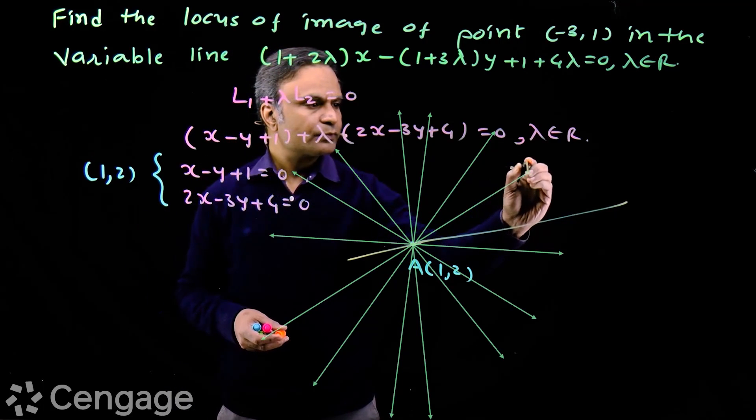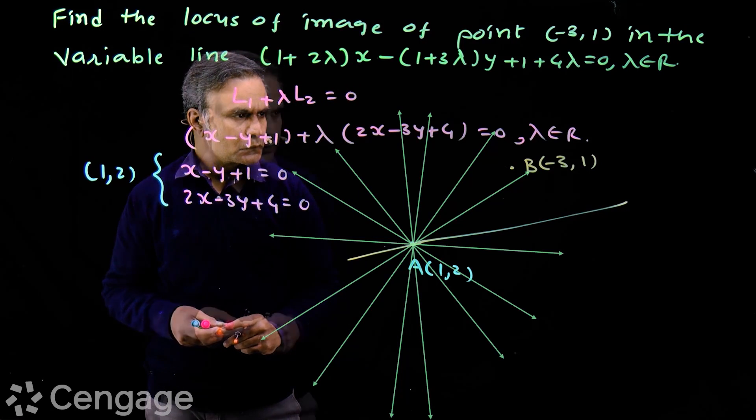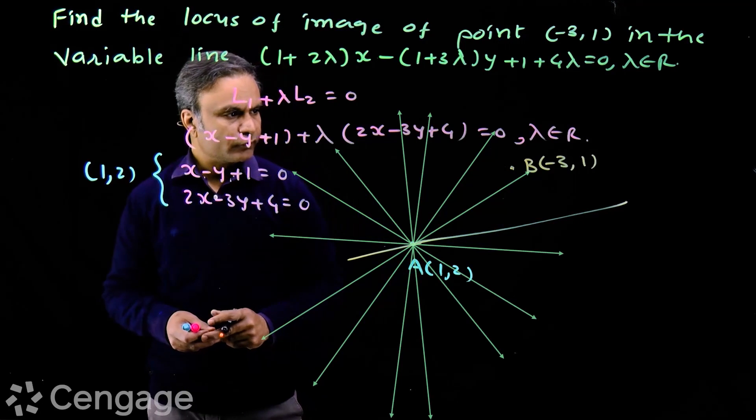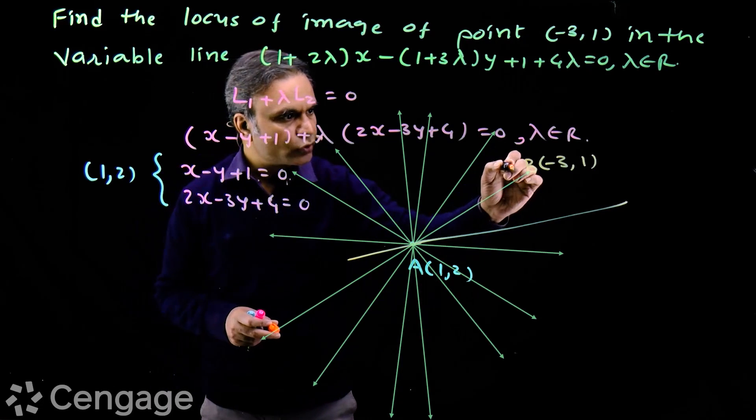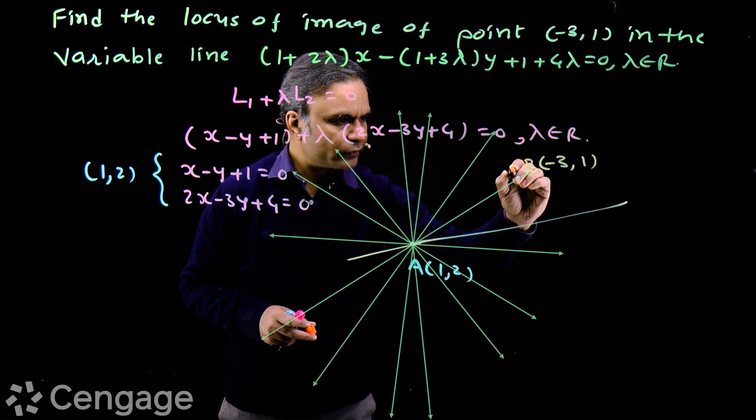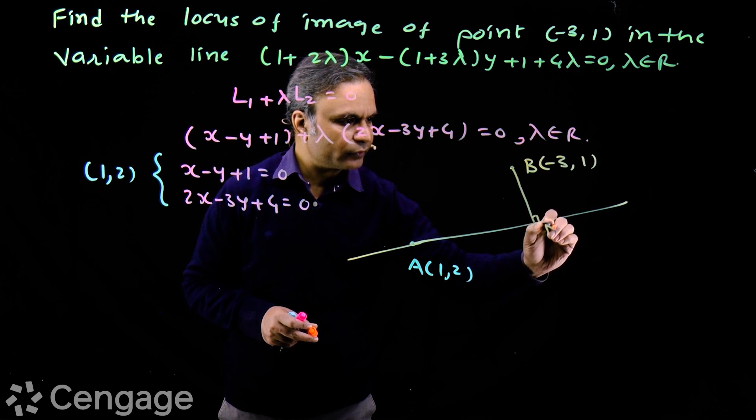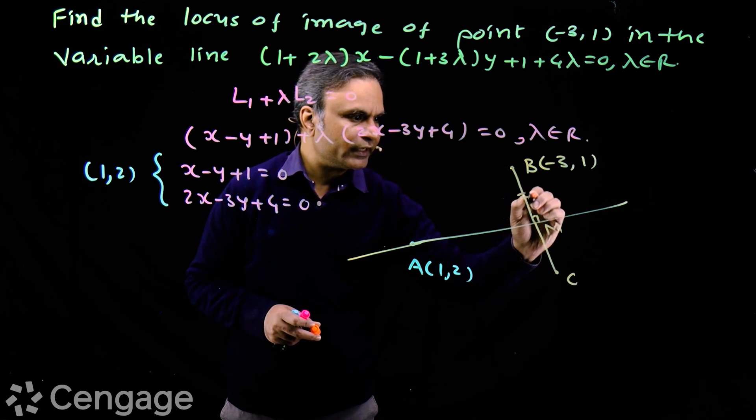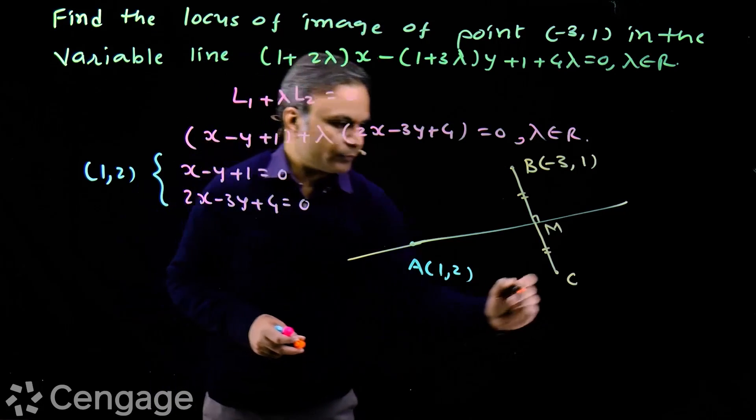Now we have here fixed point B having coordinates (-3, 1). Now we have to consider image of this point in this line. We have infinite lines through point A. In each line we consider image of point B. So for that we draw perpendicular from point B on the line. This is foot of perpendicular.